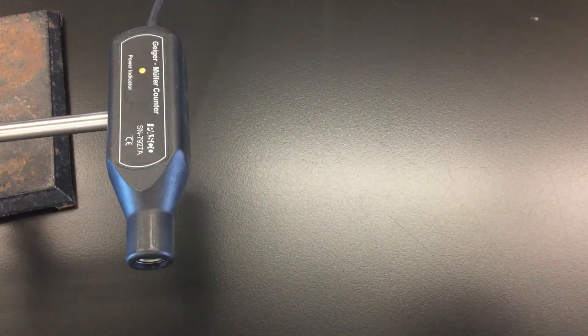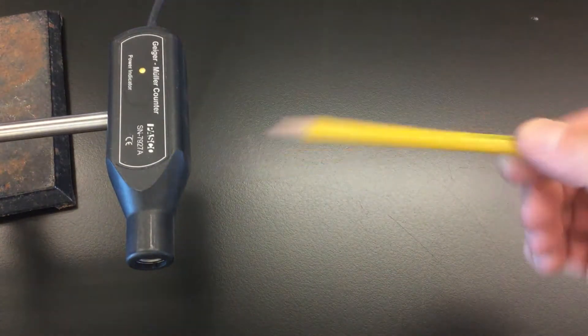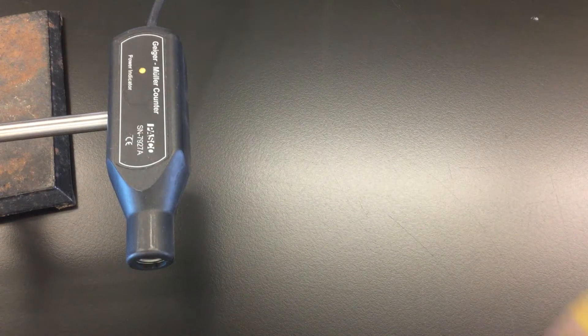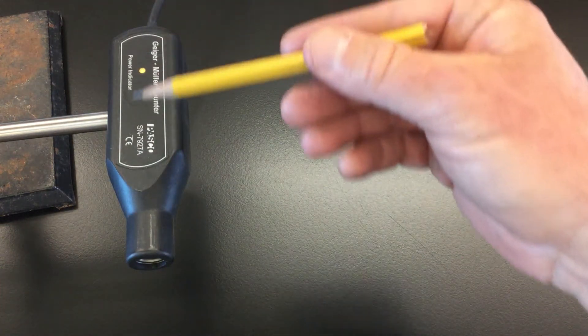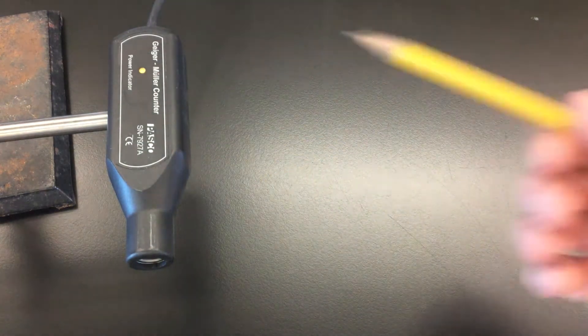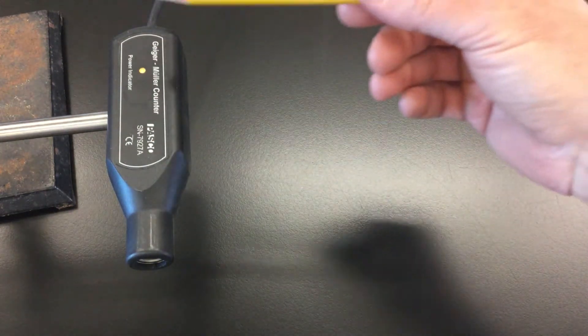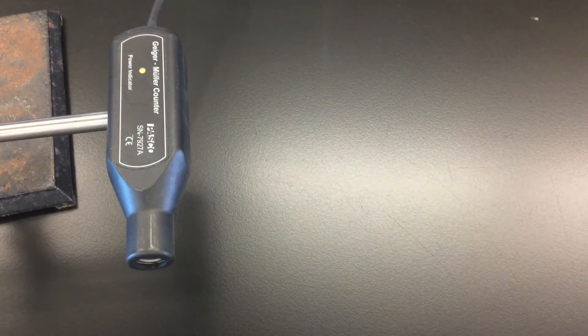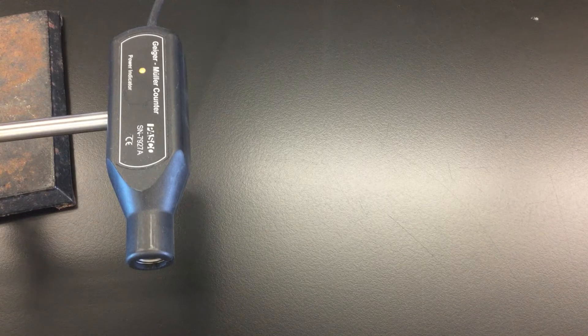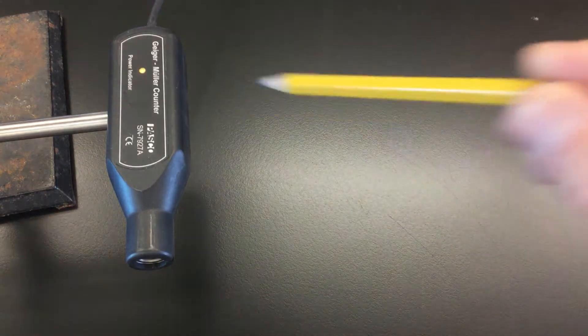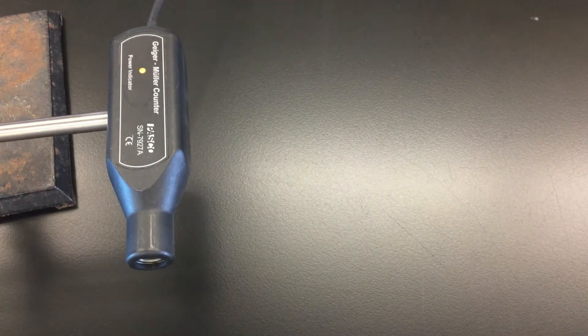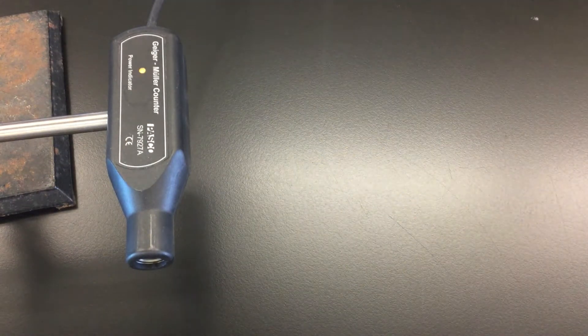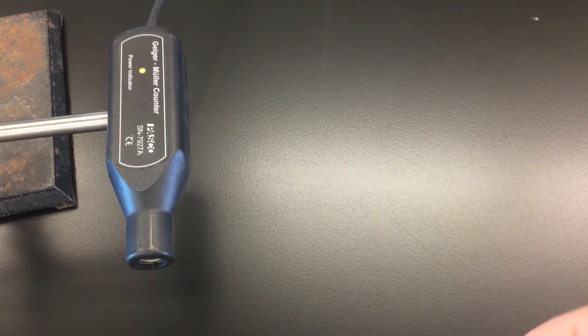You're basically hearing the level of background radiation in this room. What I found from experience is on average about one count every three seconds from this Geiger counter. That's just the background radiation in this room - every time a high energy particle or gamma ray punches through the casing, you get that beep.